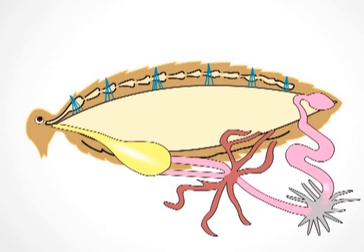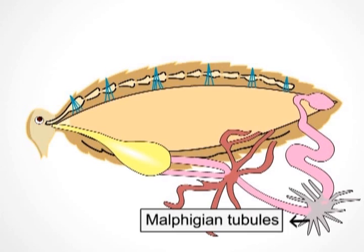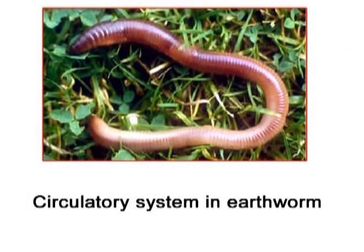In cockroach, blood does not have hemoglobin and is colorless. It does not help in the transport of oxygen, but it helps in the distribution of nutrients to various organs and carries waste from various organs to the excretory system — that is, the Malpighian tubules.